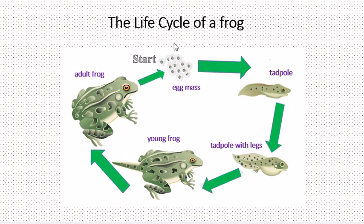Here's the life cycle of a frog. It starts with a simple egg mass which looks like a bunch of little eyeballs there and then it grows to become a tadpole.